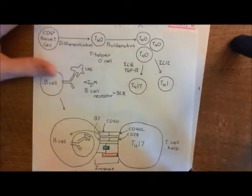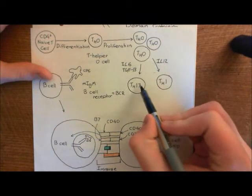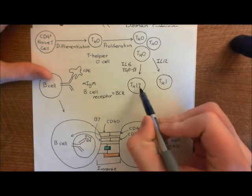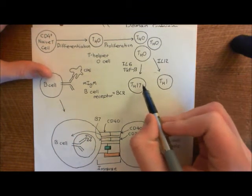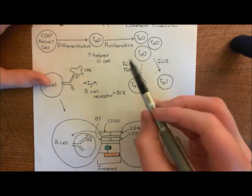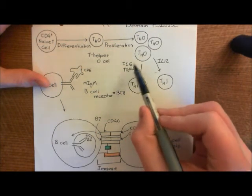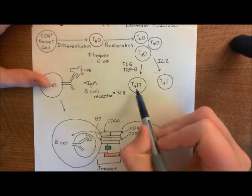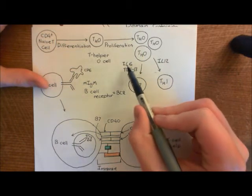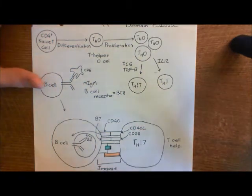Our population of T helper naught cells starts differentiating into T helper 17 cells, and this differentiation process, again, is not very well understood. But two important cytokines that drive the differentiation of T helper naught cells into T helper 17 cells are interleukin-6 and transforming growth factor beta.